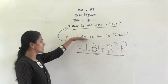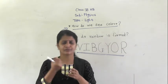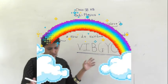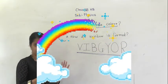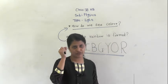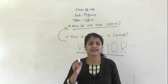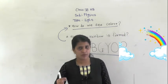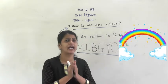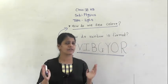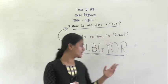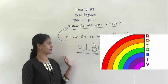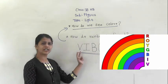Now, let me recap how the rainbow is formed. When a beam of sunlight falls on particular raindrops, it splits into seven different colors — red, orange, yellow, green, blue, indigo, violet. This is how the rainbow is formed.